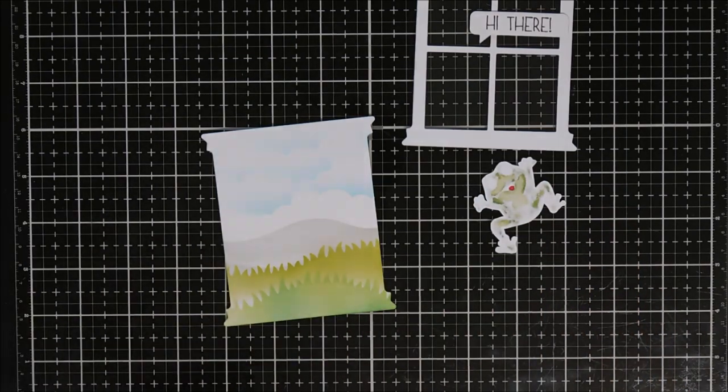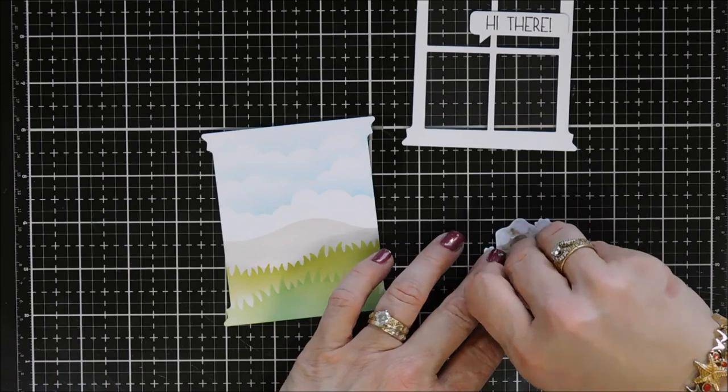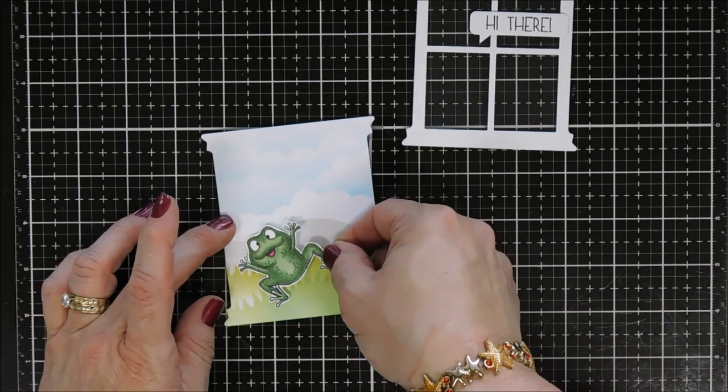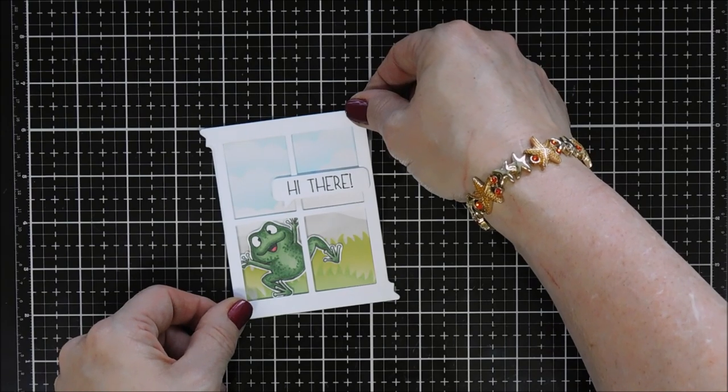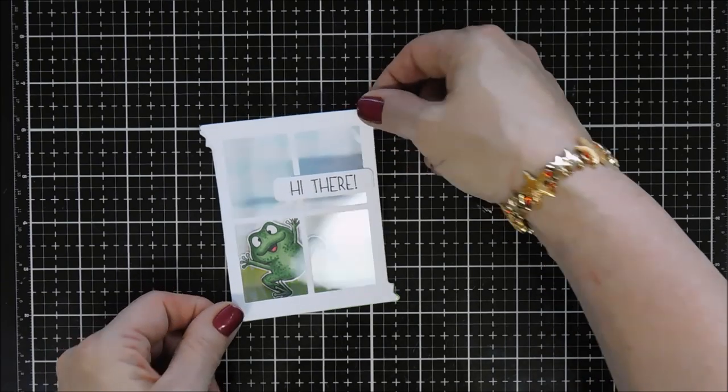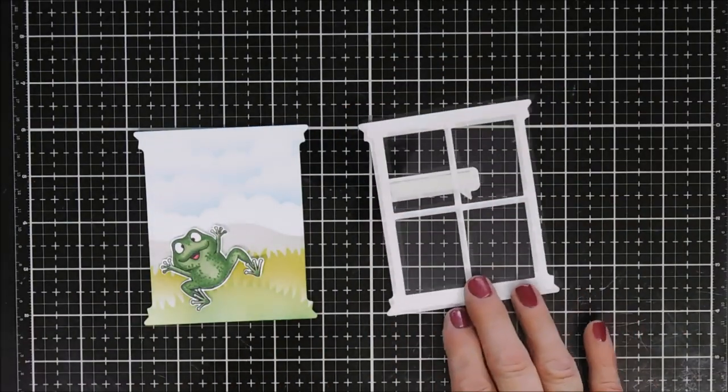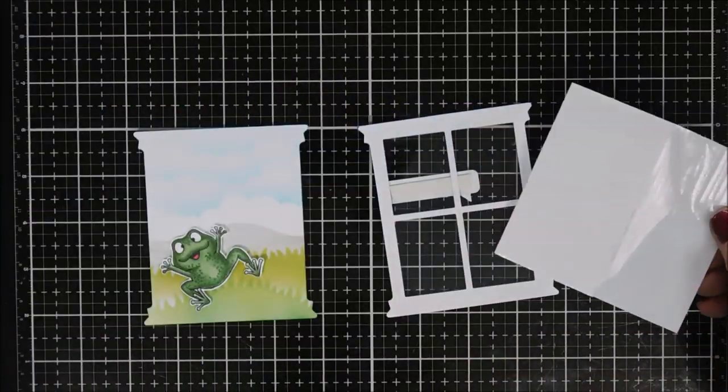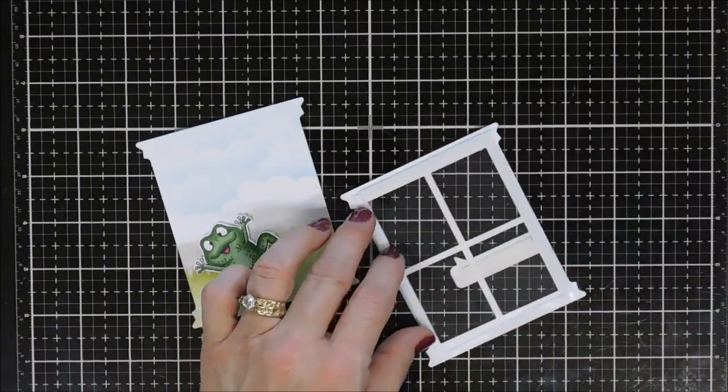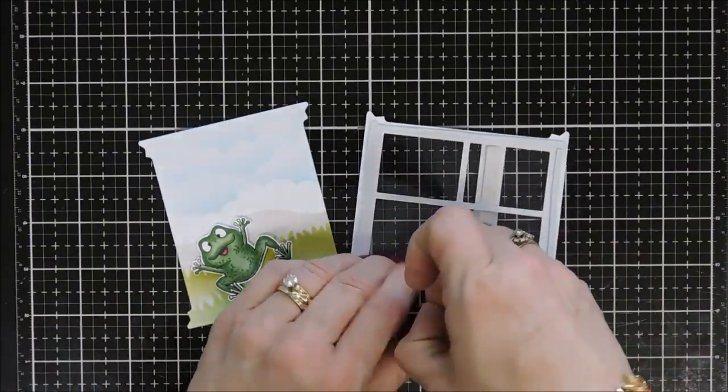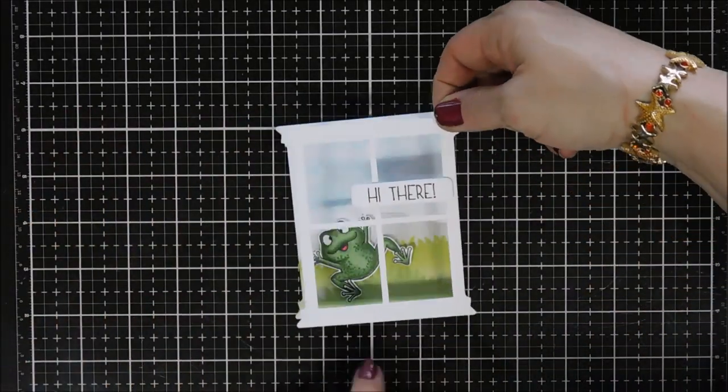Now after we have this done I'm gonna go ahead and pop up my little froggy, this way it looks more like he's stuck to the window. We'll just stick him down to the background and then I'm gonna go ahead and take some thin strips of foam tape and add them around the back side of my window pane. I'll just remove all the release paper and this is gonna fit right over my background and I think he looks so cute.